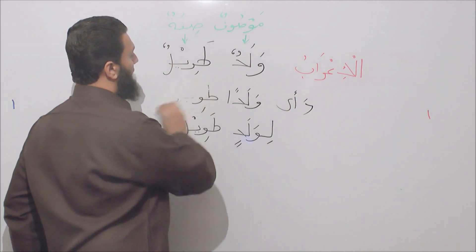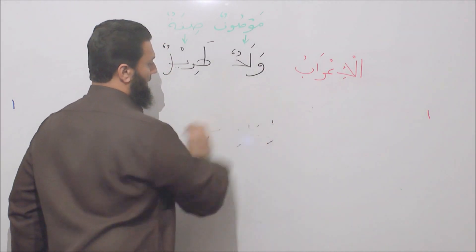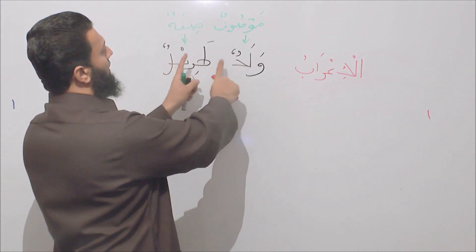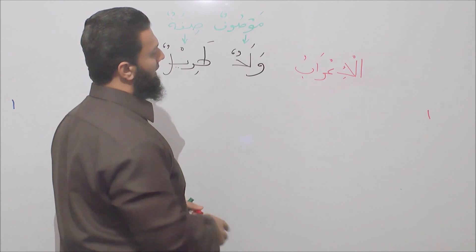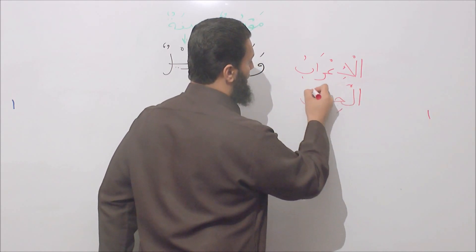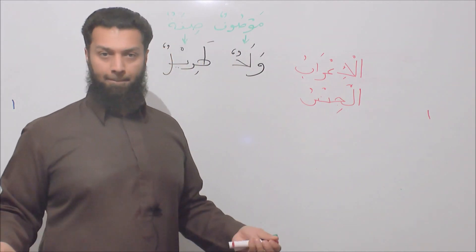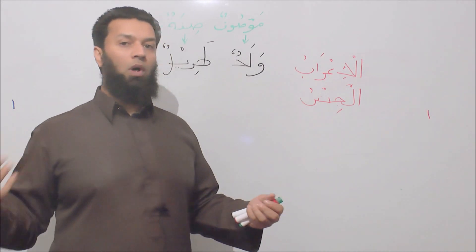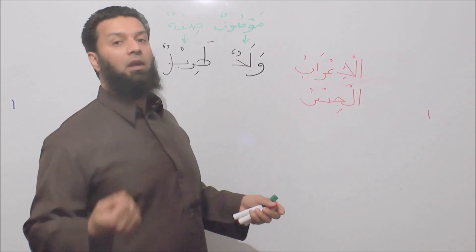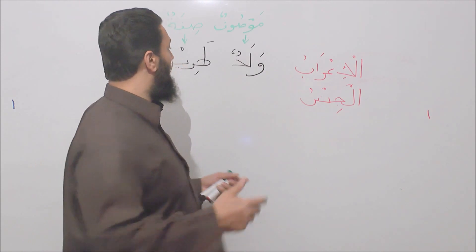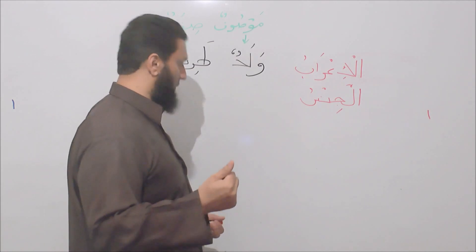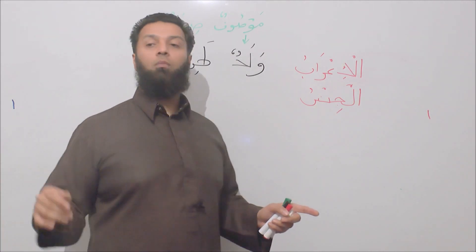Now moving on to the next rule with regards to agreement between sifatun and mawsufun — the second rule is al-jinsu, which relates to gender. In Arabic, words have two genders: either words are male, referred to as mudhakkarun, or female, referred to as mu'annathun.